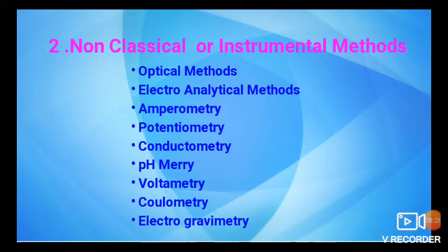Then there is voltammetry, where the sample is made part of an electrolytic cell and the current is measured. There is also coulometry, where electricity in the form of coulombs consumed by the analyte is measured. And finally, there is also the electrogravimetry method. This way, there are different types of non-classical or instrumental methods.